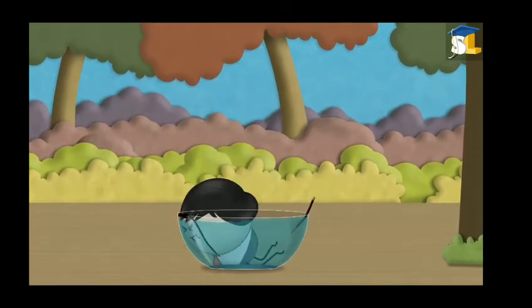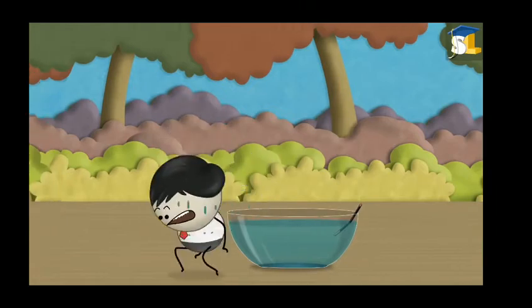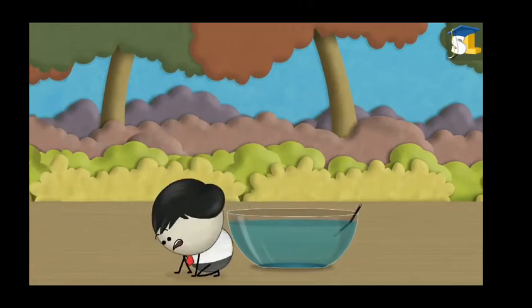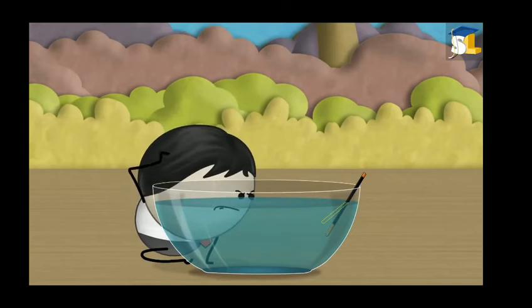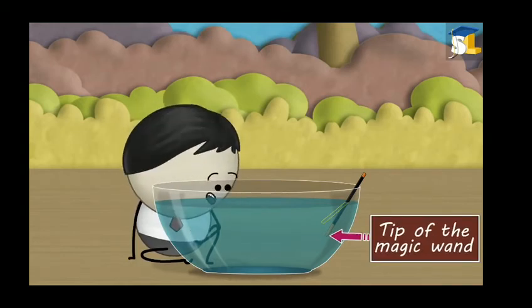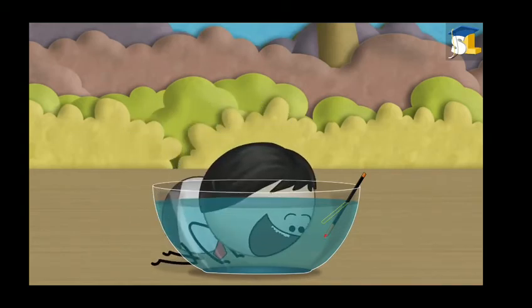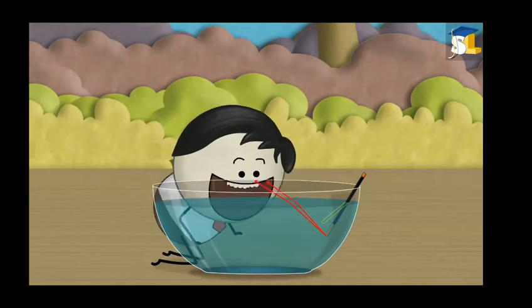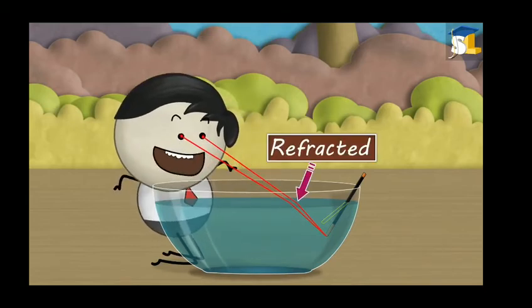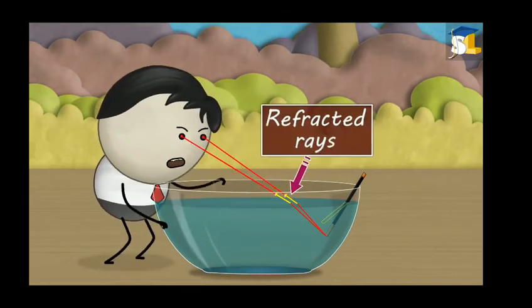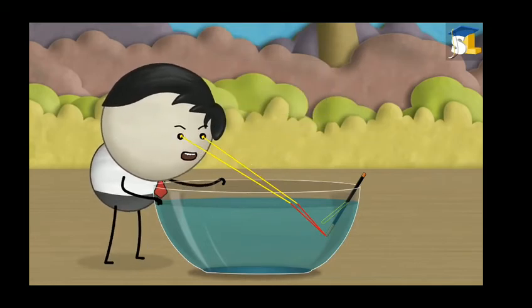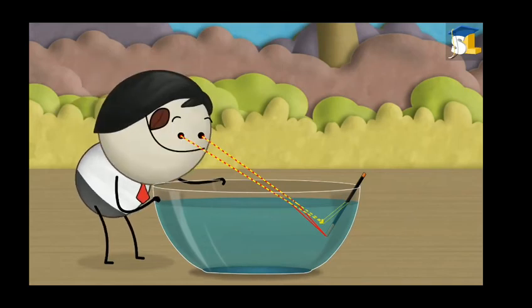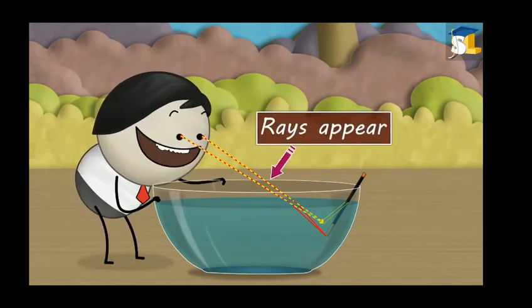When the light rays coming from the tip of the magic wand pass from water to air, they change direction — that is, they get refracted. When these refracted rays reach our eyes, our eyes trace them backward as straight lines. Due to this, the rays appear to come from a point slightly above the original position.